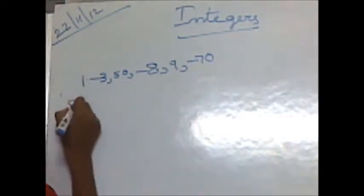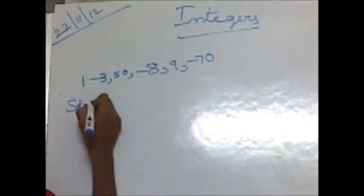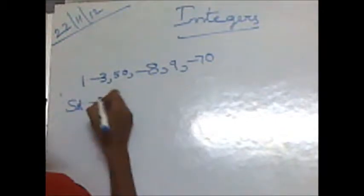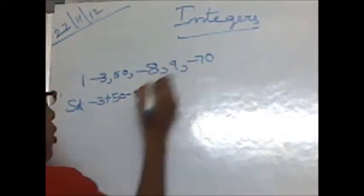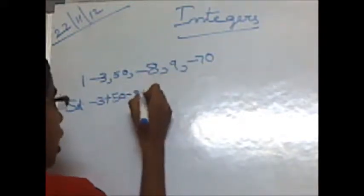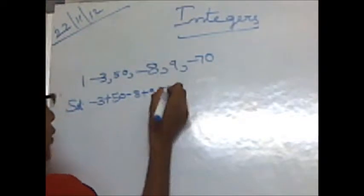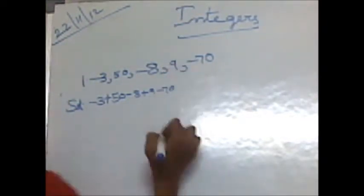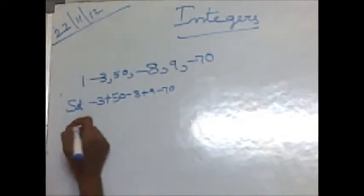Now, the solution. Minus 3, 15 means plus 15, minus 8, plus 9, minus 17. If there is no symbol in front of a number, then we have to keep it as plus.